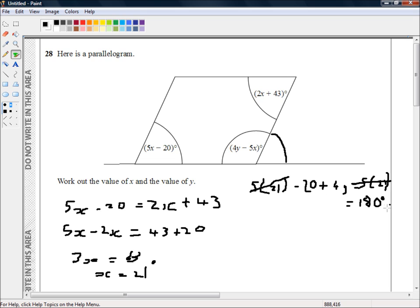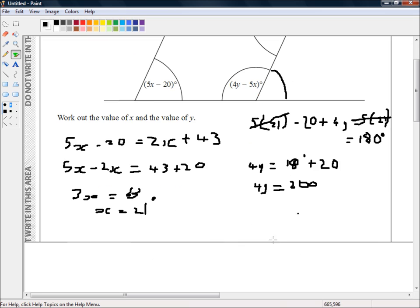Moving that minus 20 over to the other side, so we've got 4y is equal to 180 degrees plus, because I'm adding 20 to both sides, plus 20. So that means 4y is equal to 200. So y is equal to 200 divided by 4. So y is equal to 50 degrees.